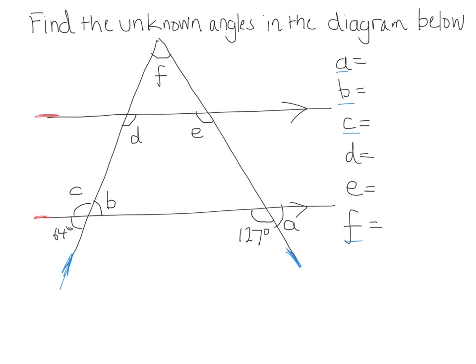Alrighty, in no particular order, let's see if we can figure out what's going on. Since 127 and A are supplementary, 180 minus 127 will be 53, so that will mean A will be equal to 53.